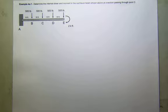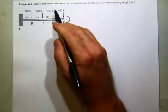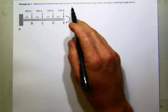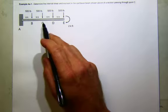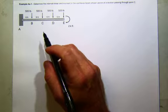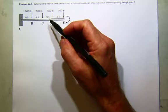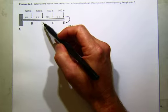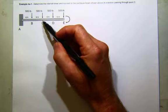Alright, so let's try this problem. It asks for the internal shear force and bending moment passing through point C. The first thing you'll probably notice compared to the problem we previously worked is that point C is right underneath the force.